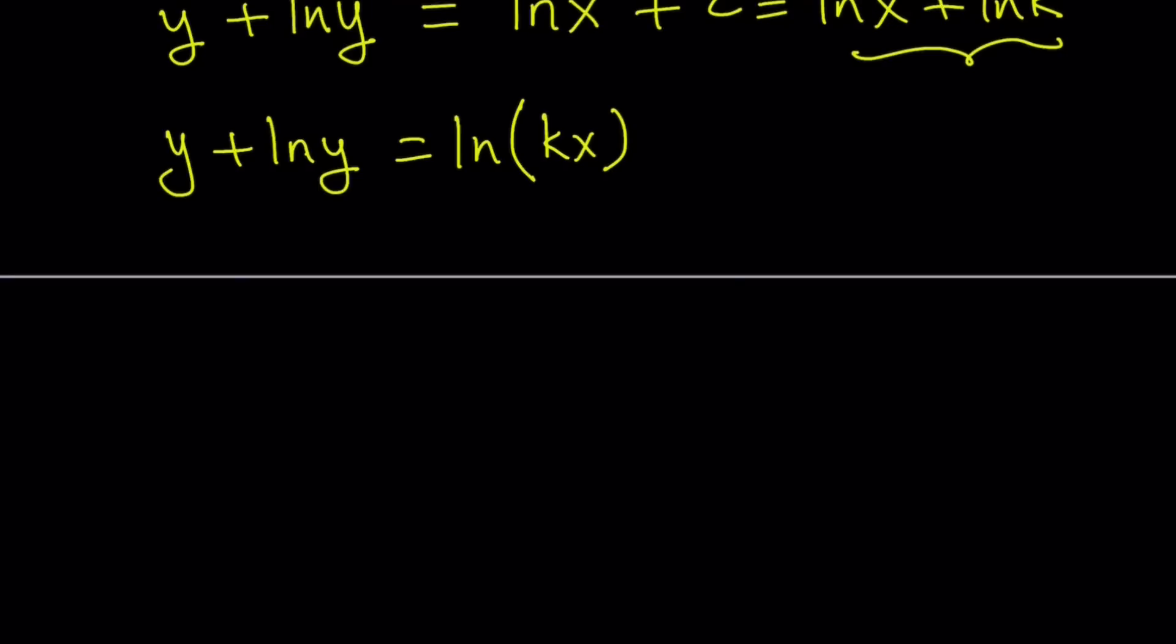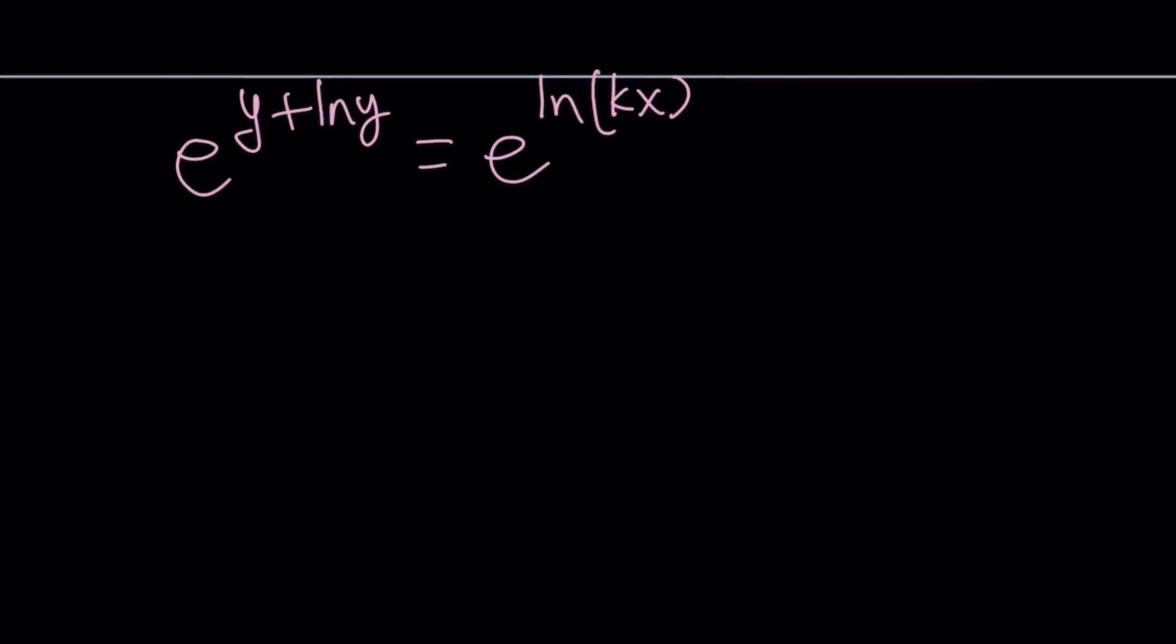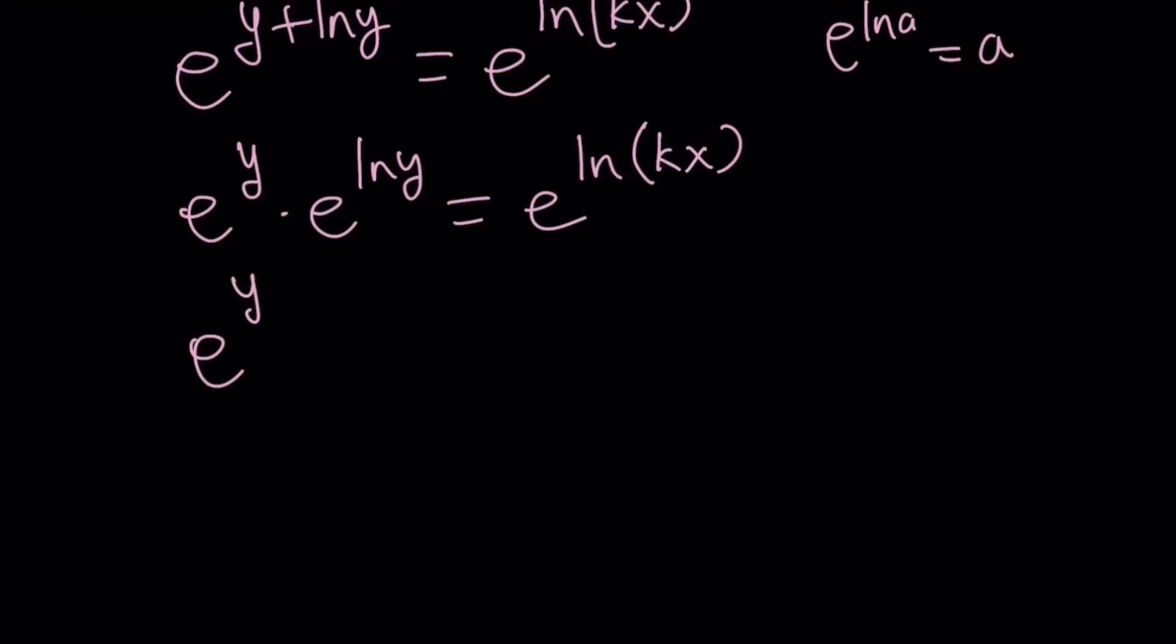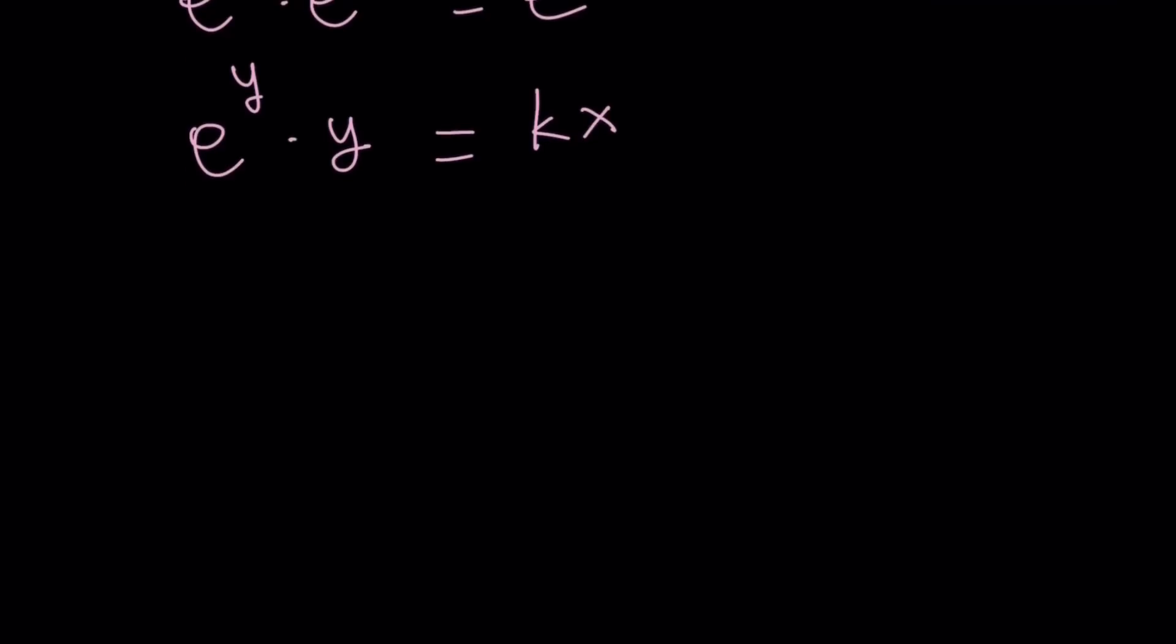Anyways, so how do you kind of get a better picture from here? You can go ahead and e to the power of both sides because the presence of ln on both sides tells us to do that. So e to the power y plus ln y equals e to the power ln kx. By the way, when I say ln, it's the natural log of something. Now, we have a sum in the exponent, so let's go ahead and separate them. And then use the definition because ln and e to the power are inverse functions or e to the power ln something is something. E to the power ln a is a. So we can kind of write this as e to the y times y equals kx. Or let's write it as y times e to the y equals kx.